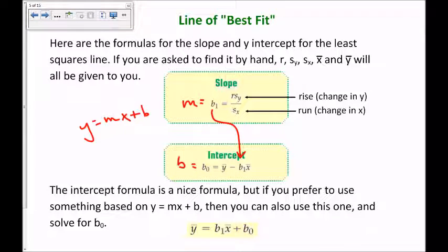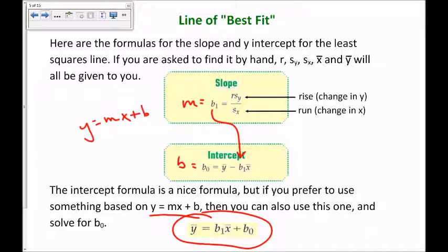If you prefer the y = mx + b form to memorize it, you can use that formula and then just solve for b₀, using x̄, ȳ, and the slope you just found. By the way, r, sᵧ, sₓ, x̄, and ȳ will all be given to you if you're asked to find this line of best fit by hand.